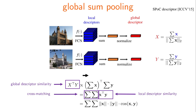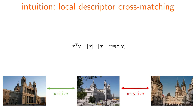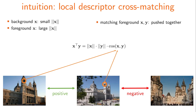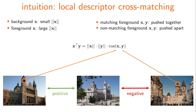We saw that while optimizing such global descriptors, local descriptors in the activation maps are implicitly optimized too. Background features are cross-matched to all other features in negative examples, and their norm is pushed towards zero to decrease the total image similarity. The norm of foreground and discriminated features remain high to obtain reasonable similarity in positive examples, while descriptors of matching and co-appearing foreground features are brought closer. On the other hand, foreground non-matching features in negative images get the descriptors pushed apart to decrease the contribution to the total similarity.